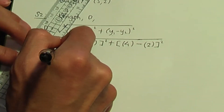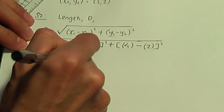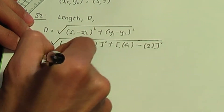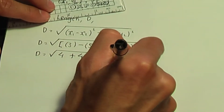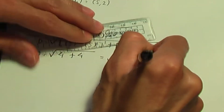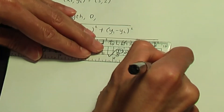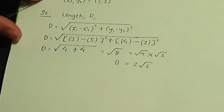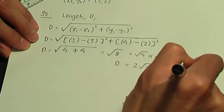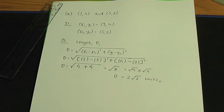Continuing the calculation: d is the square root of — 3 minus 5 is minus 2, minus 2 squared is plus 4, plus 4 minus 2 is 2, 2 squared is 4. So we get root 8. Using our knowledge of surds, root 8 is the same as root 4 times root 2. Root 4 is 2, so it's 2 root 2. So d is 2 root 2 units. This is the solution to example one, part A.